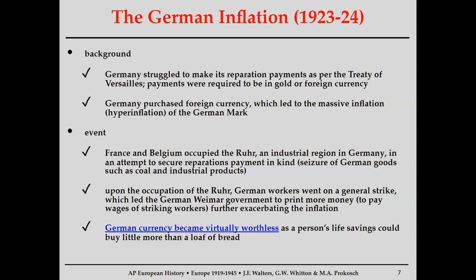Speaking of economic instability, this is probably one of the best examples besides the Great Depression. As we know, the Treaty of Versailles required Germany to pay about $33 billion worth of reparation payments to the Allies — in today's money, about half a trillion dollars. The only way Germany could pay these was through hard gold or foreign currency; the Allies would not accept actual German currency. So Germany used up much of their gold and started purchasing foreign currency to pay off reparations.